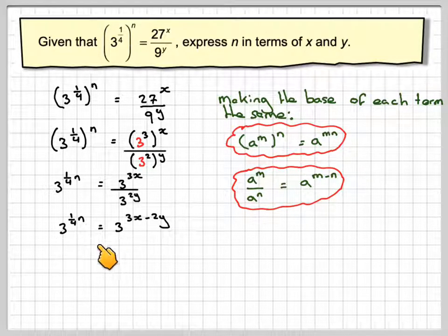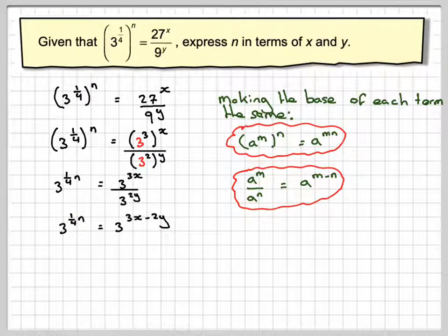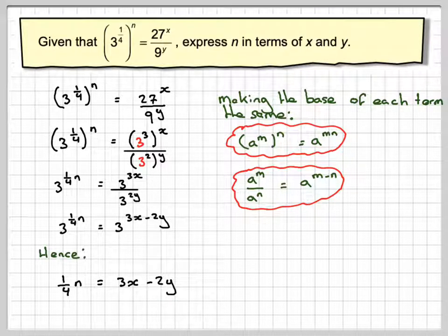Now, we've both got the same base on each side. We've both got 3 to some power and 3 to some power, which now means the powers have to be the same. So a quarter n must be equal to 3x minus 2y.